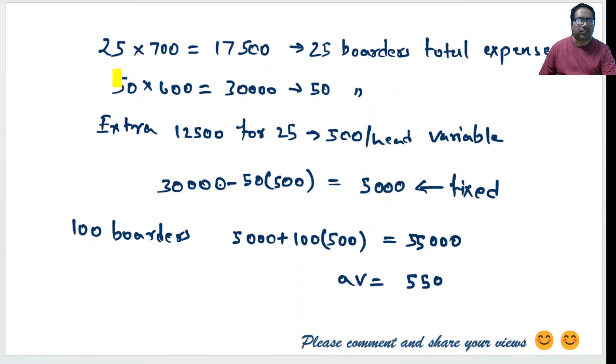Now these extra 25 have contributed 30,000 minus 17,500, which is 12,500. This should be variable cost only because fixed cost is fixed for everyone. So this 12,500 is actually variable cost for 25 people, that means 500 per head variable.